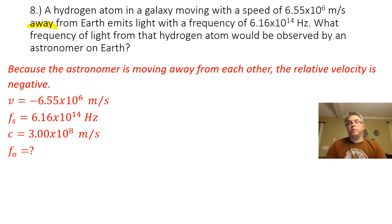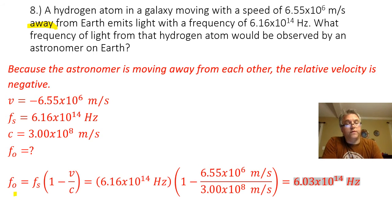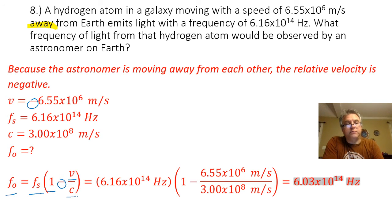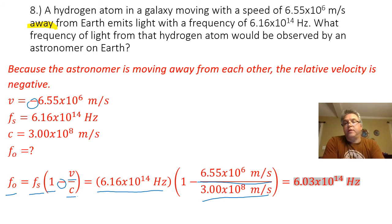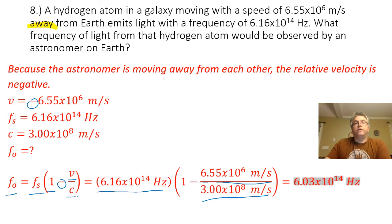I'm going to use the frequency form of the Doppler equation. The observed frequency equals the source frequency times the quantity 1 minus the relative velocity between the earth and the galaxy divided by the speed of light. I plug in the source frequency, the relative velocity, and the speed of light, and when I do the math, I get an observed frequency of 6.03 times 10 to the 14th hertz.